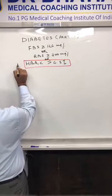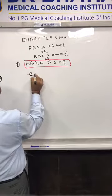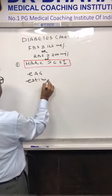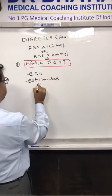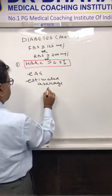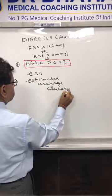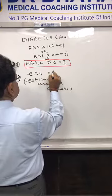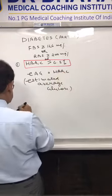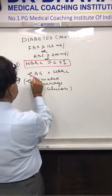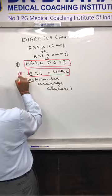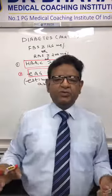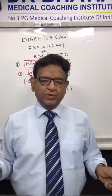The next new thing is Estimated Average Glucose, written in short as EAG. This is the second carry-home message: estimated average glucose is based on HbA1c. Let's learn what this means.